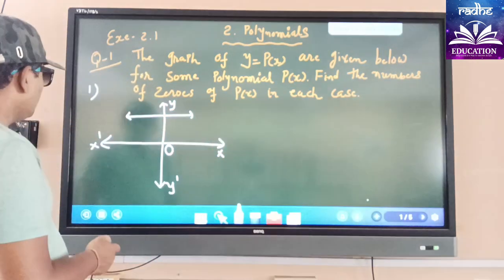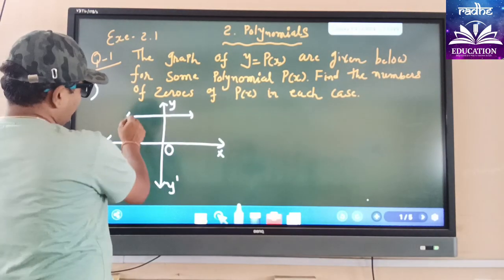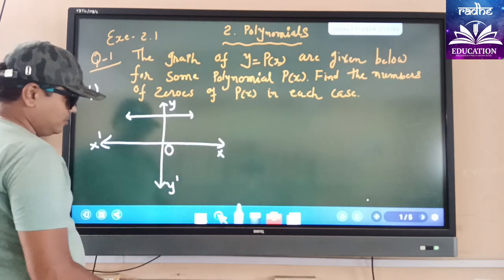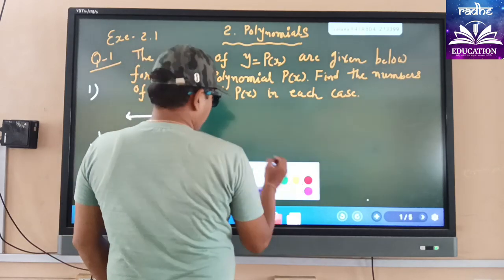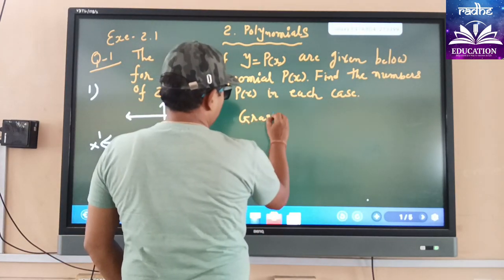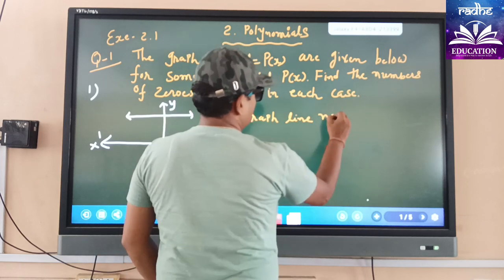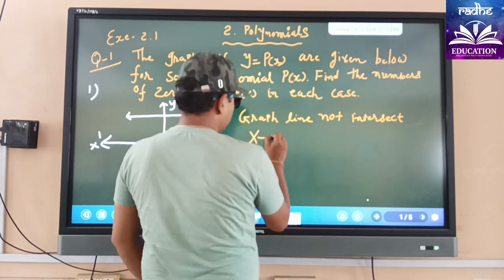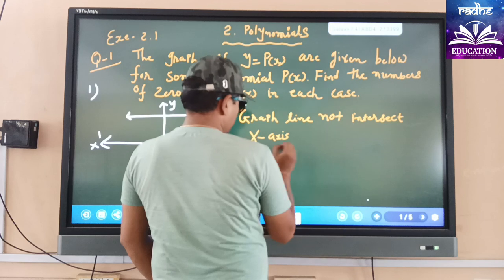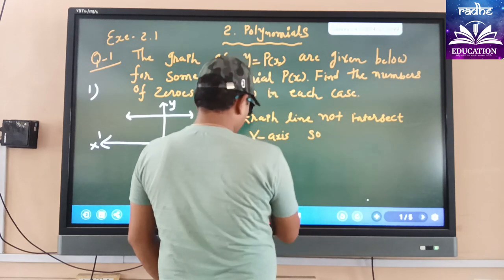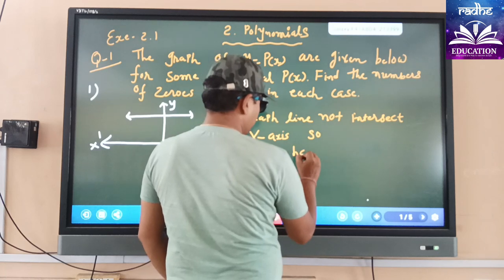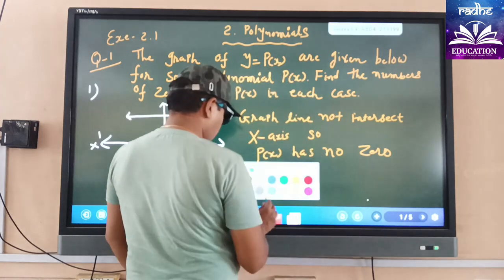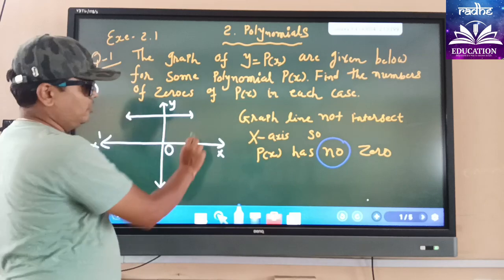Let's take one example. Here, one graph line is given. This graph line is parallel to the x-axis but it is not intersecting the x-axis. So p(x) has no zero. We have to note here that p(x) has no zero because the line is parallel to the x-axis.